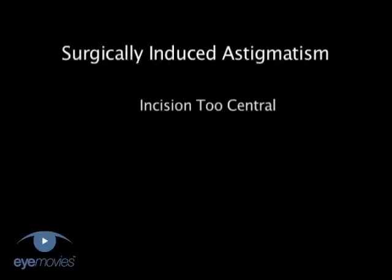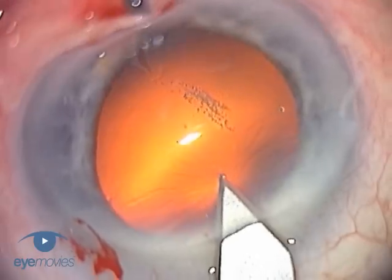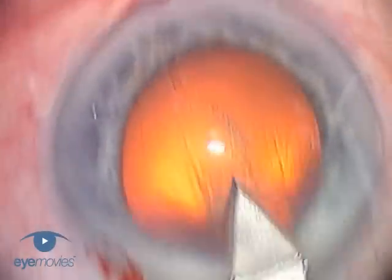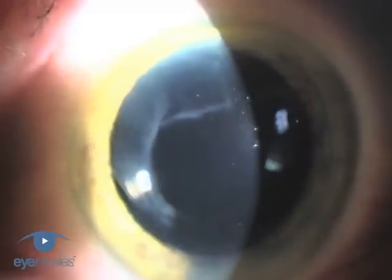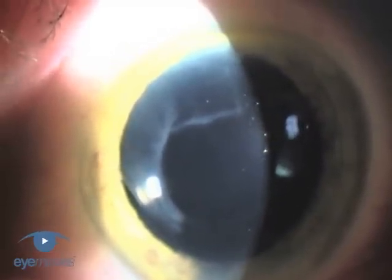There are really only two principal reasons why this happens, and two less common reasons. The first is that a clear corneal incision is made too centrally. This particular corneal incision induced a cylinder of just over 2.5 diopters, and required corrective refractive surgery afterwards.